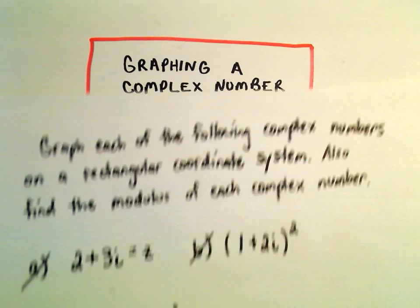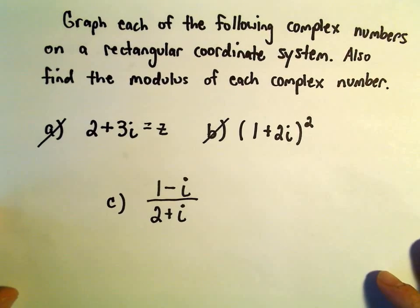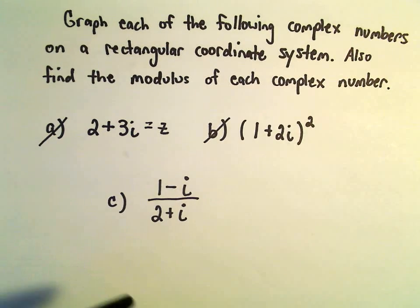Okay, so one more example of graphing a complex number and finding its absolute value or its modulus. So here we have 1 minus i over 2 plus i.